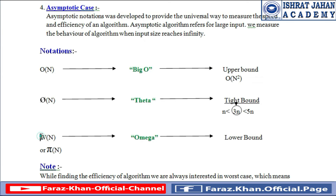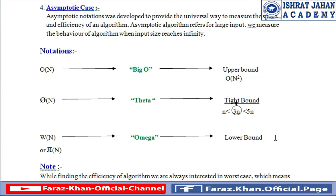Here is Omega notation — written as Ω(n). We call it Omega and it represents a lower bound. Whenever we find the key element at the very first index of an array, we call it a lower bound in asymptotic notation, and we represent the lower bound with Omega(n).